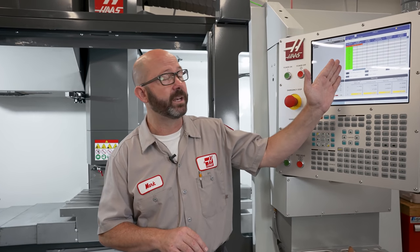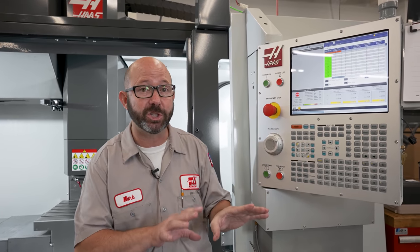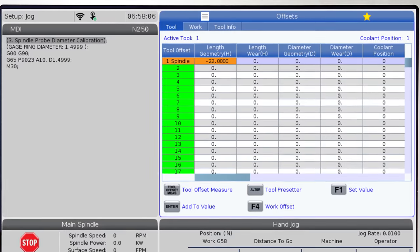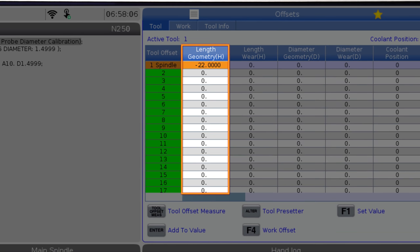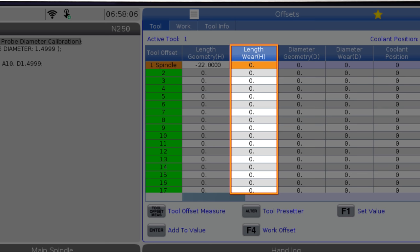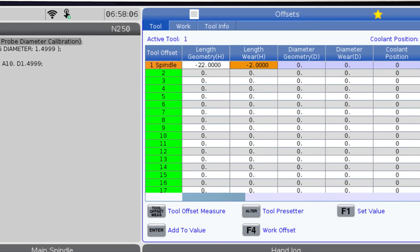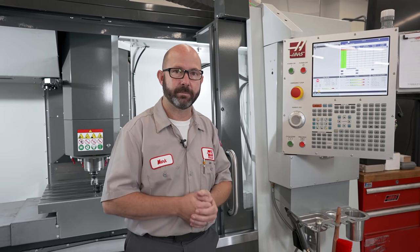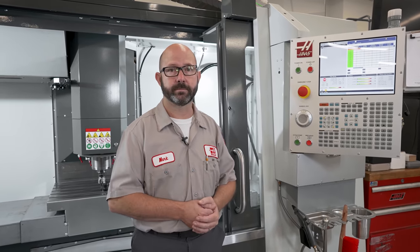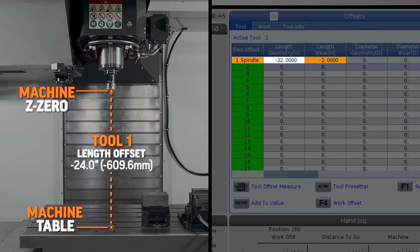Our tool length offset is actually a combination of two different columns: our length geometry and our length wear. So we can subtract two inches from our length geometry column, or we can subtract two inches from our length wear column, which is the way I typically do it just because I like to see it visually. Either way is fine. Our combined tool length offset is the distance from our machine Z0 to our machine table for this tool.